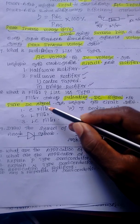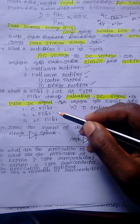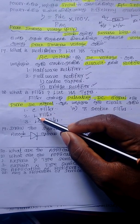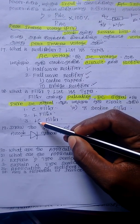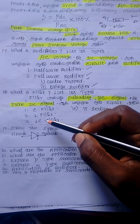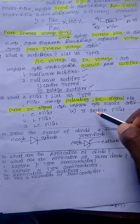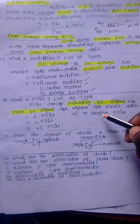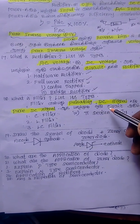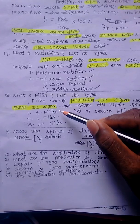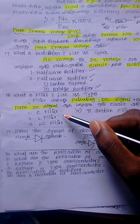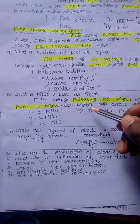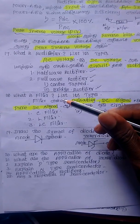A capacitor can be used as a filter. Other filter types include: the Inductor Filter, the Capacitor plus Inductor (LC) Filter, and the Pi Section Filter.